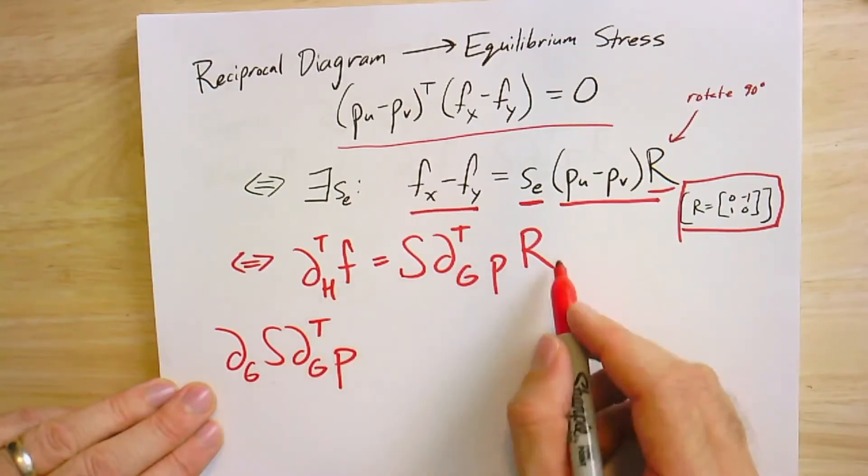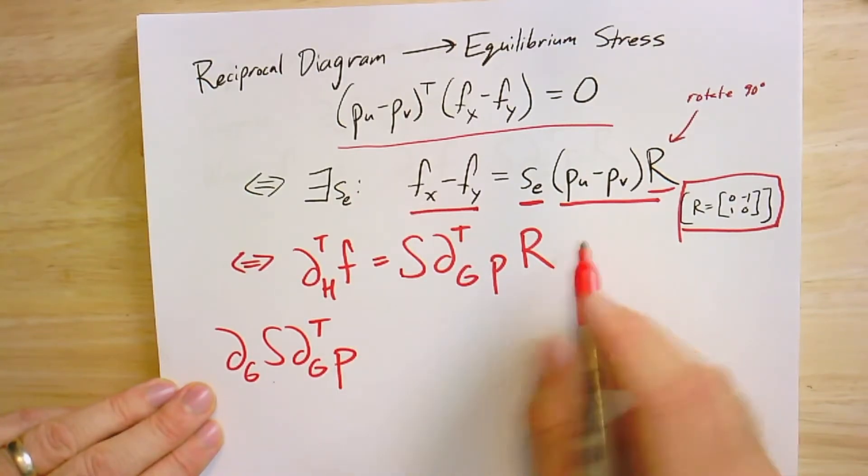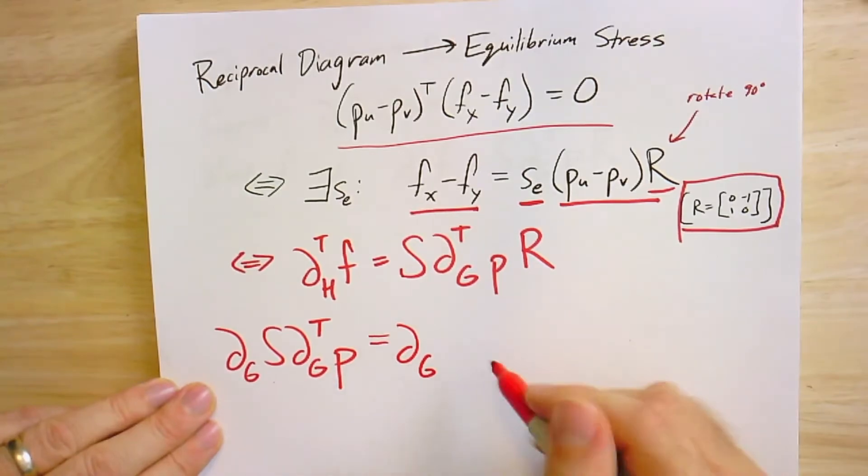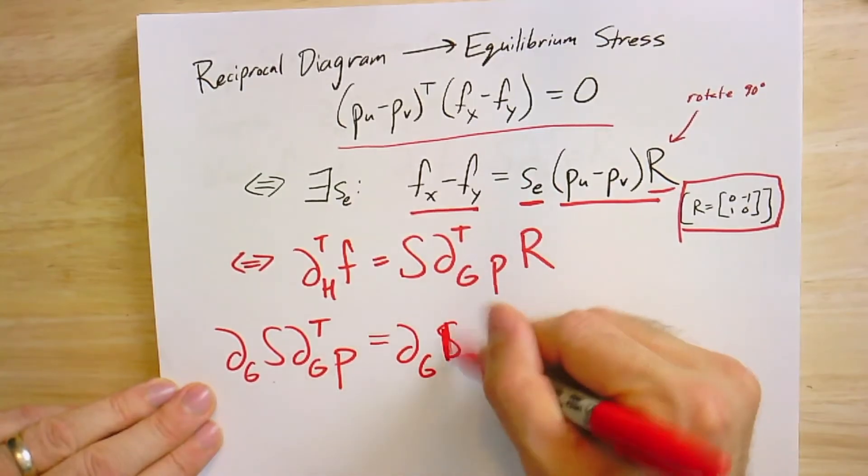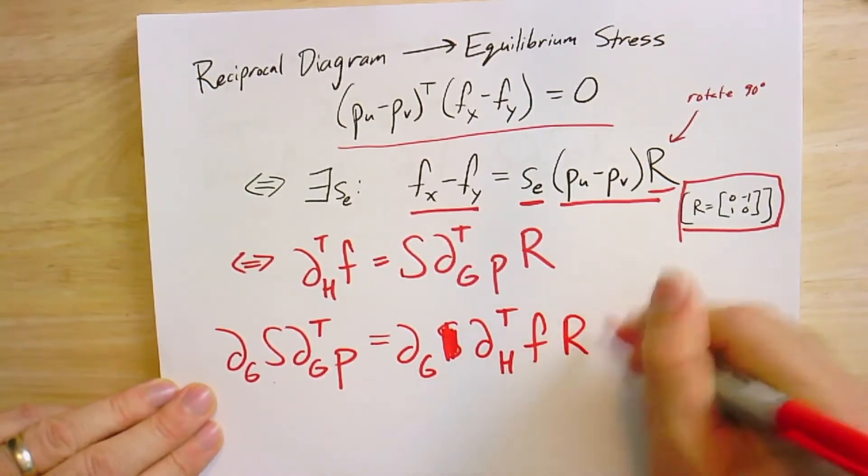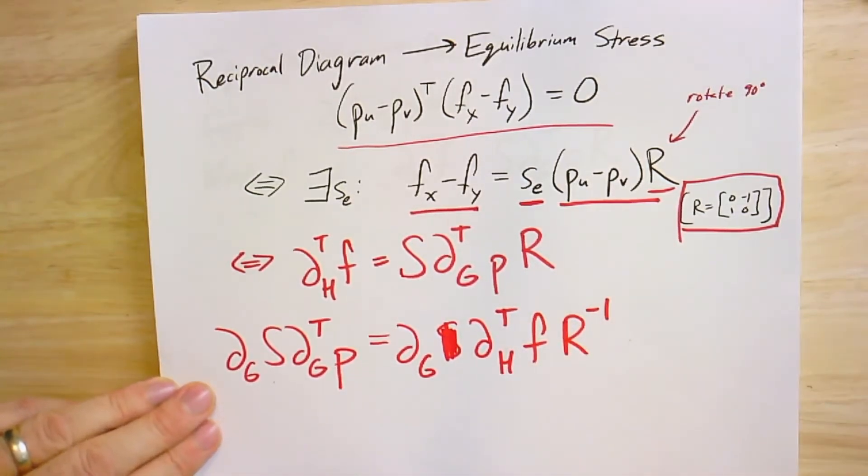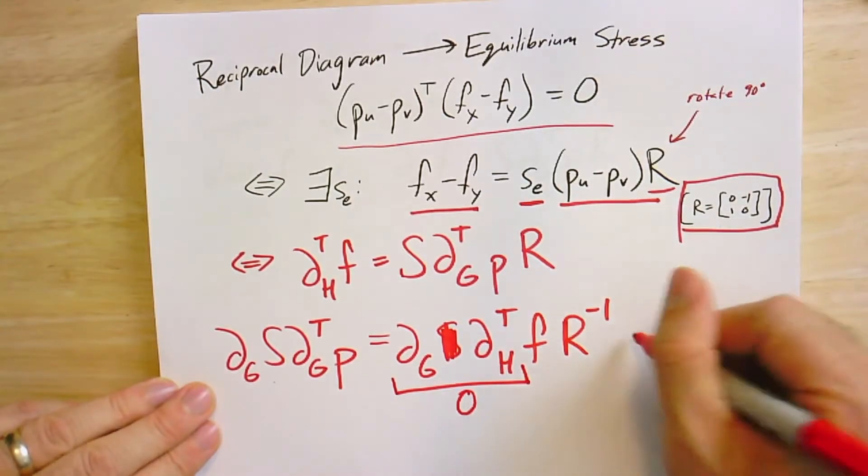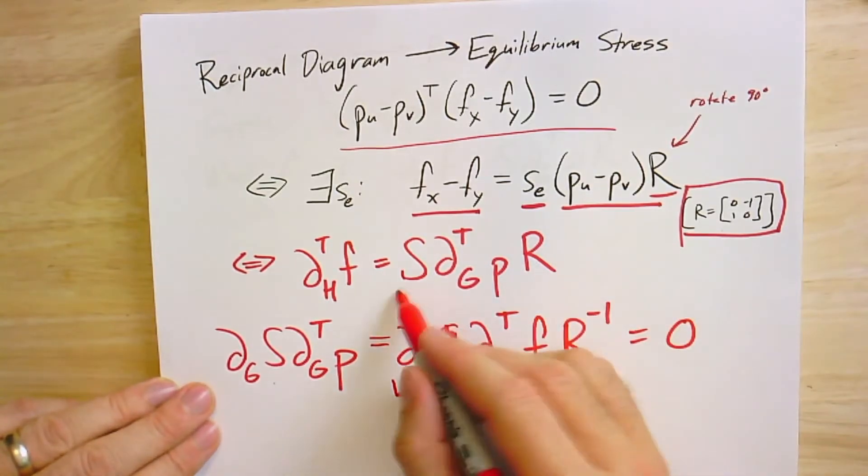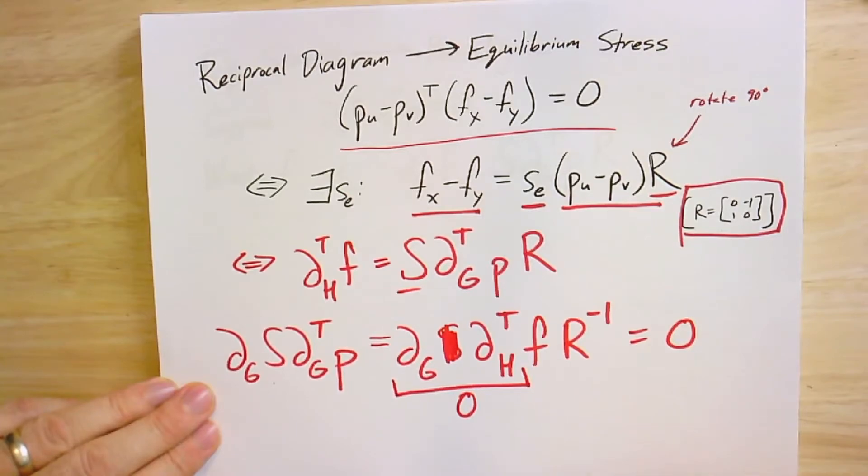it's not too hard to see that if I move this over to the other side, take maybe multiply both sides by R inverse, that would be like rotating 90 degrees the other way. Okay. I get that this is boundary of G times S times boundary H transpose F R inverse. Okay. Which seems like a big mess, but you know what? When properly oriented, these two cancel each other out. So this is just zero and that's why it's zero. And so now I've actually not only found the stress, I have a nice easy way to see what that stress really is.